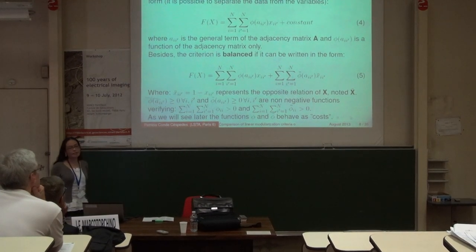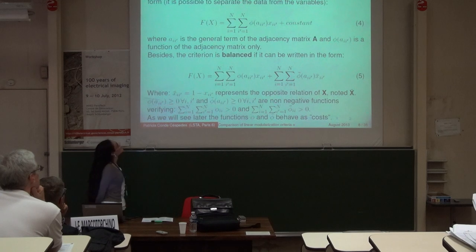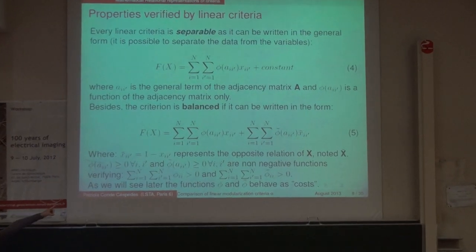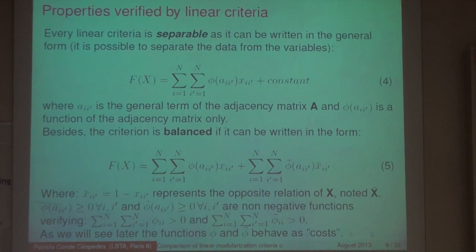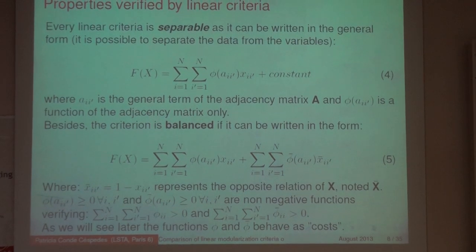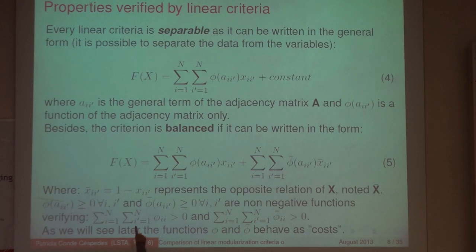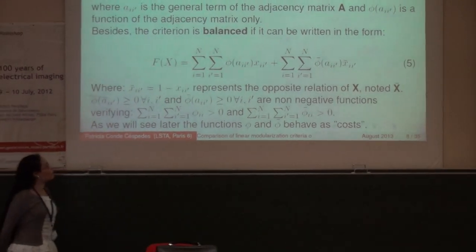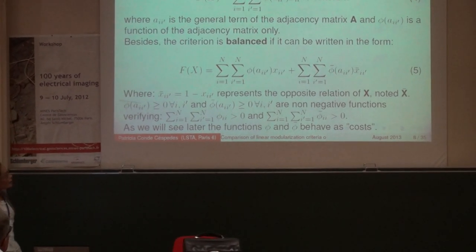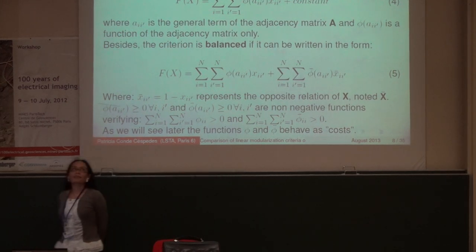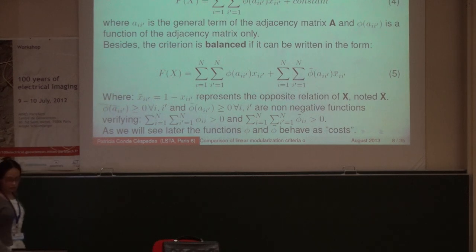Why are we interested in linear criteria? Because they have good properties. The first one is that they are all separable. Being separable means they can be written in the form of equation 4 as a scalar product of a function of the original data, p(a)_{i,i'}, and the unknown x. Besides that, linear criteria can also verify the property of balance. They are balanced if they can be written in a specific form where the functions phi and phi-bar are functions of the original data only, are non-negative, and especially their sum is positive.